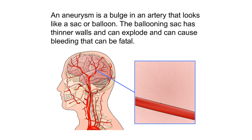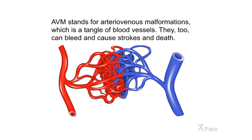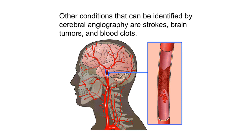An aneurysm is a bulge in an artery that looks like a sack or balloon. The ballooning sack has thinner walls and can explode, causing bleeding that can be fatal. AVM stands for arteriovenous malformations, which is a tangle of blood vessels. They too can bleed and cause strokes and death.